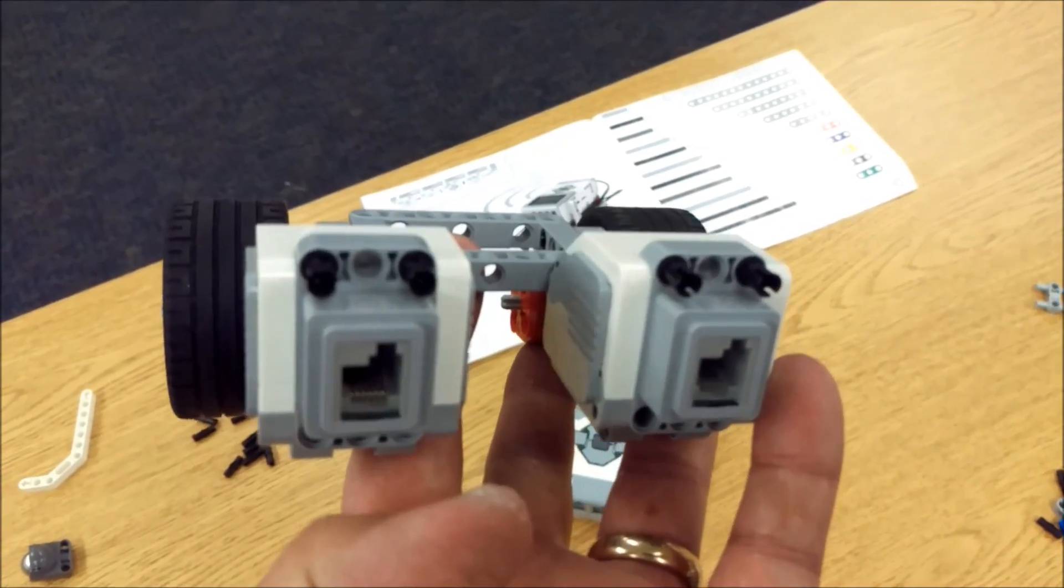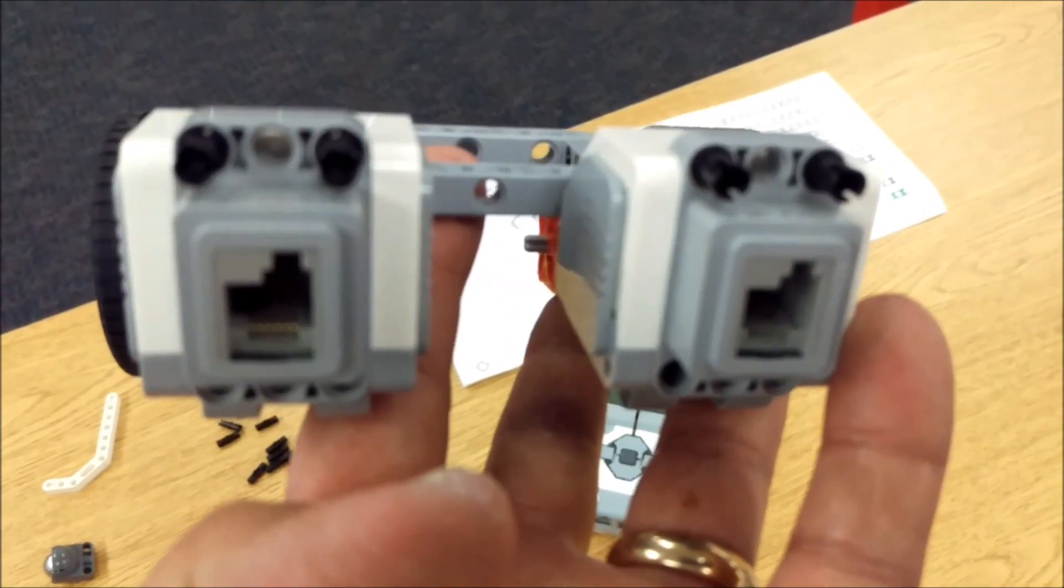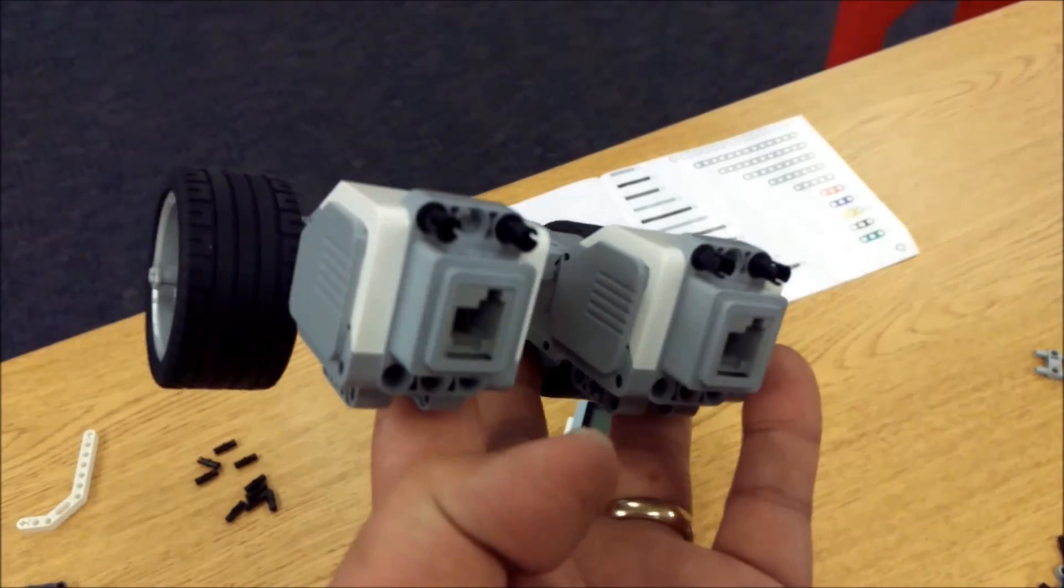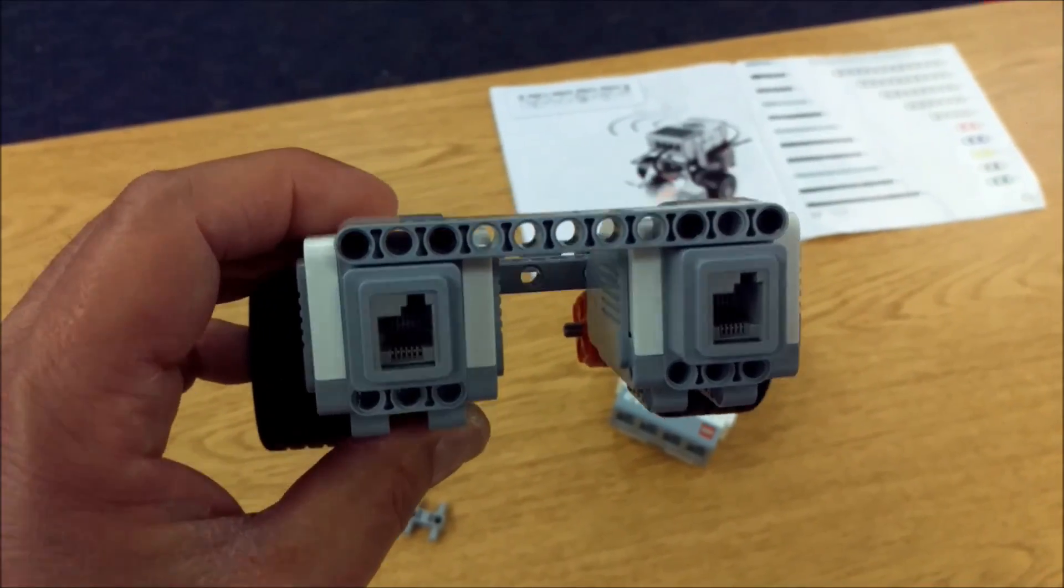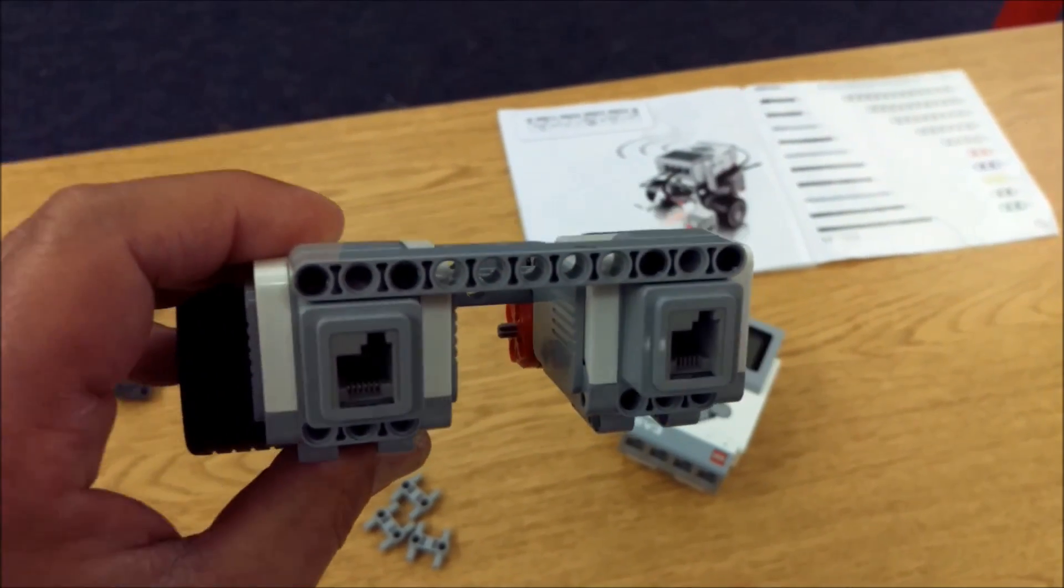Next I'm going to take four black connectors and place them into the top of each large motor like that. And then I will go ahead and attach the 11 hole beam into those connectors.